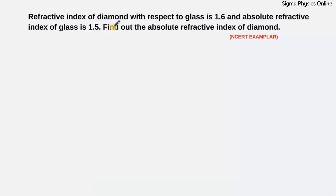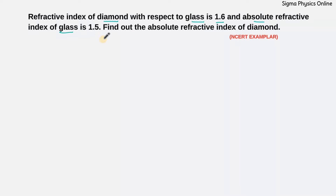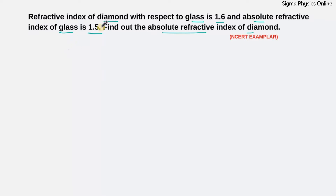So here we have been given the refractive index of diamond with respect to glass is 1.6 and the absolute refractive index of glass is 1.5. That means the refractive index of glass with respect to air is 1.5, and we need to find out the absolute refractive index of diamond, that is the refractive index of diamond with respect to air. Let's write down first what all are given.